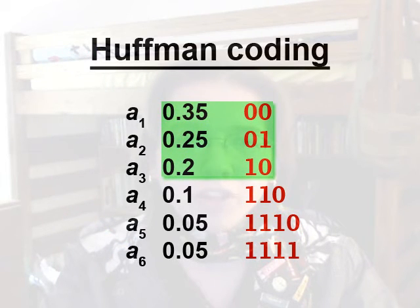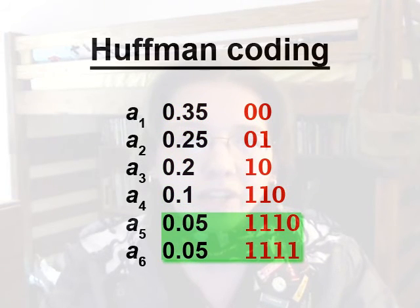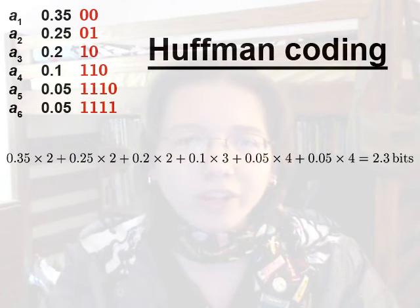Notice that the three most common symbols use only two bits. One symbol uses three bits, and the two least common symbols use four bits. So we'll calculate the number of bits in each codeword, weighted by the probability of the codeword's symbol, and we get an average of 2.3 bits used per symbol.